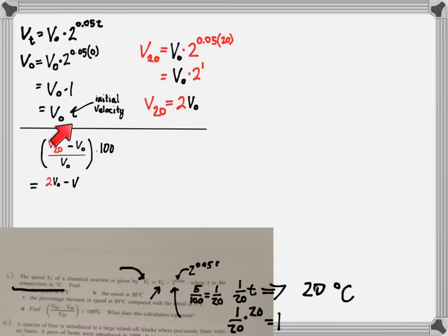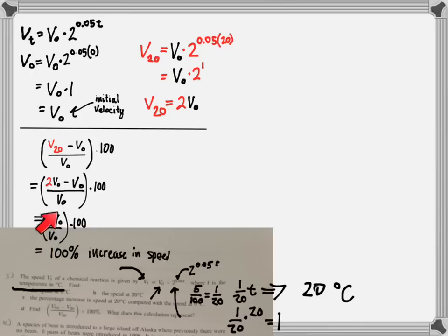To prove that, I'm just going to show the speed at 20 degrees minus the speed at 0 degrees. That's a difference in speeds. I'm going to divide that by the initial speed to get the ratio comparing the change in speed compared to the initial speed. And that gives me, instead of V sub 20, I write twice the initial velocity minus the initial velocity. That's going to be 1 times the initial velocity. 1 times initial velocity over initial velocity, that divides out to 1, and we show 100% increase in the speed. 100% increase in the speed, 2 times as much speed in the first 20 degrees.